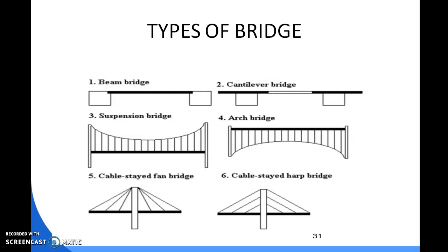A truss bridge is a bridge whose load-bearing structure is composed of a truss — a structure of connected elements forming triangular units. Truss bridges are one of the oldest types of modern bridge. Next is the cantilever bridge.